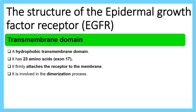The transmembrane domain is a hydrophobic domain — it doesn't like water. It consists of 23 amino acids comprising exon 17, firmly attaches the receptor to the membrane, and is involved in the dimerization process.